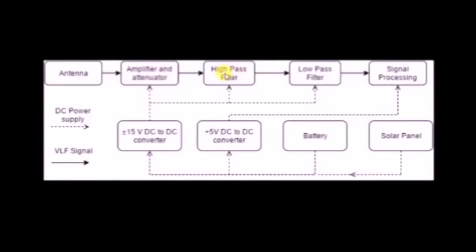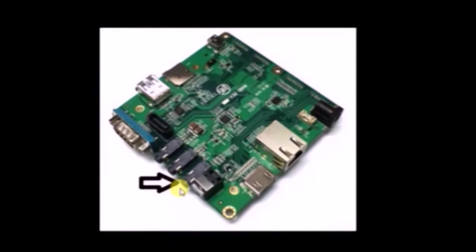An 8th order active high pass filter and a 10th order active low pass filter are used to create a pass band of 500 Hz to 47 kHz. The signal is then sampled by the analog input of a WAN board at 96 kHz.